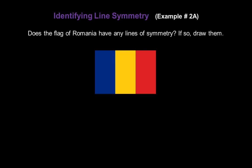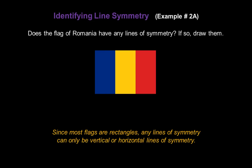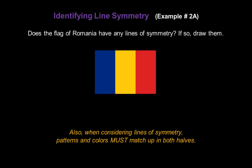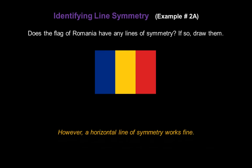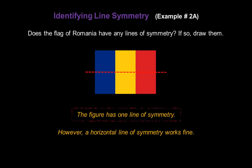Does the flag of Romania have any lines of symmetry? And if so, draw them. Since most flags are rectangles, any lines of symmetry can only be vertical or horizontal. Also, when considering lines of symmetry, patterns and colors must match up in both halves. In this figure, the colors won't match on either side of a vertical line, so that's not a line of symmetry. However, a horizontal line of symmetry will work just fine. So this figure has one line of symmetry.